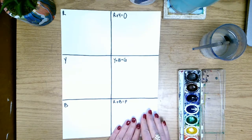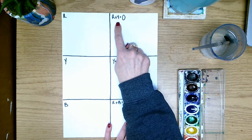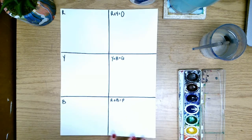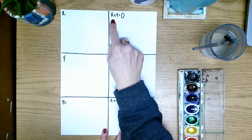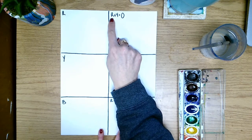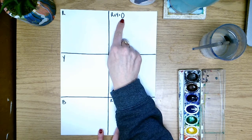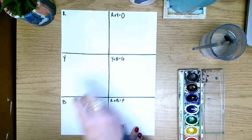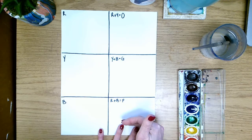Over on this side we have these weird kind of math problems or algebra looking problems with letters and what this is, this is telling you exactly what two colors you're going to mix together and what color it's going to make that's going to go right here. So these are the secondary colors.